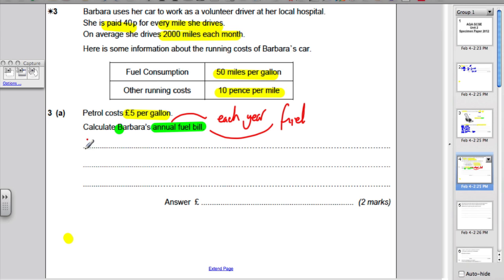Okay, well, what do we know about fuel? Well, we know fuel is £5 per gallon. And we also know that her car drives 50 miles for each gallon. And we also know that monthly, per month, she travels 2,000 miles. So, the first thing we would like to do is work out how many gallons she uses a month on fuel.